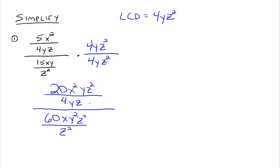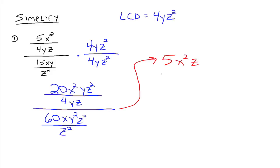Now we can simplify each of the individual fractions in the numerator and denominator respectively. So 20x squared yz squared over 4yz: 20 divided by 4 gives you 5, the x squared stays, the y's divide out, and you've got z squared over z, so that leaves you a z. This entire numerator simplifies down to 5x squared z.